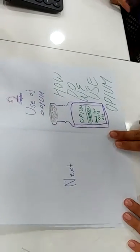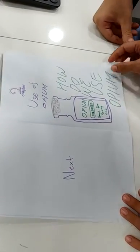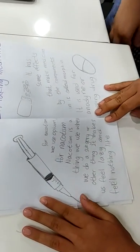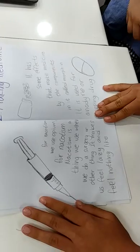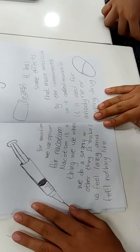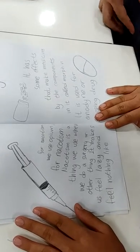Use of Opium. How do we use Opium? For Necotism. We use Opium for Necotism. Necotism is a thing we use when we do surgery or other things.